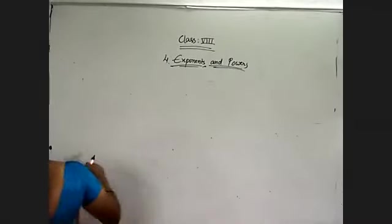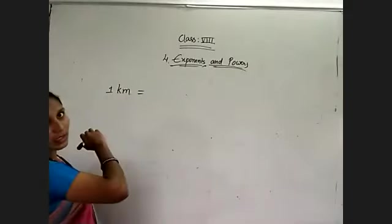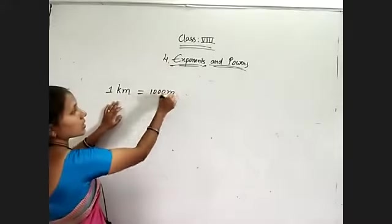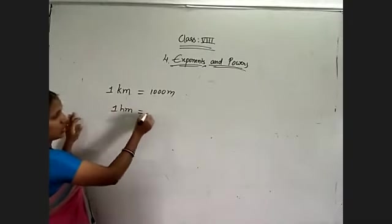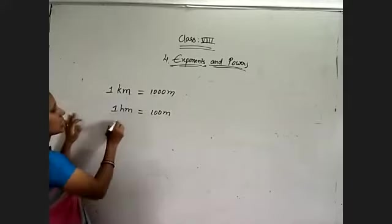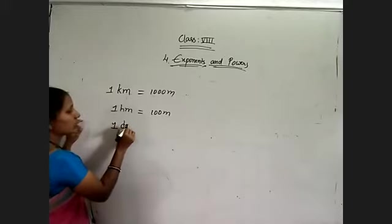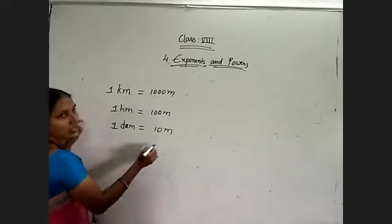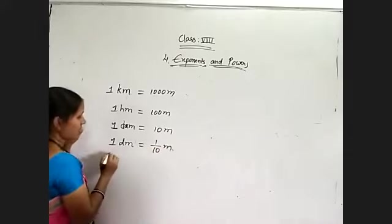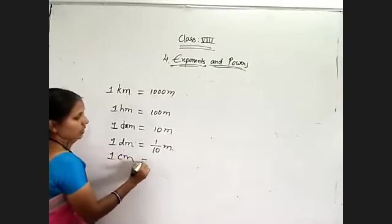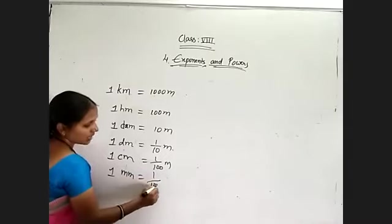Before that, we have some measurement relations. One kilometer is equal to 1000 meters. One hectometer is equal to 100 meters. One decimeter is equal to 10 meters. One decimeter is equal to one-tenth of a meter. One centimeter is equal to one-hundredth of a meter. One millimeter is equal to one-thousandth of a meter.